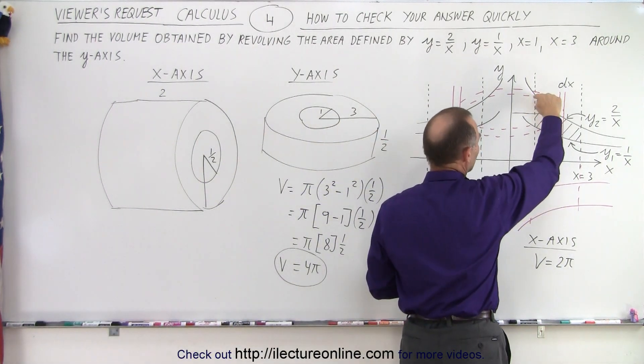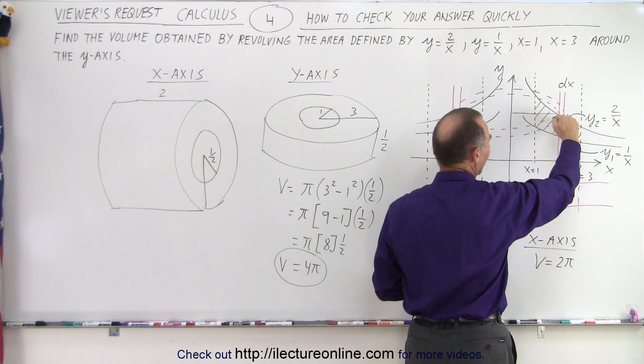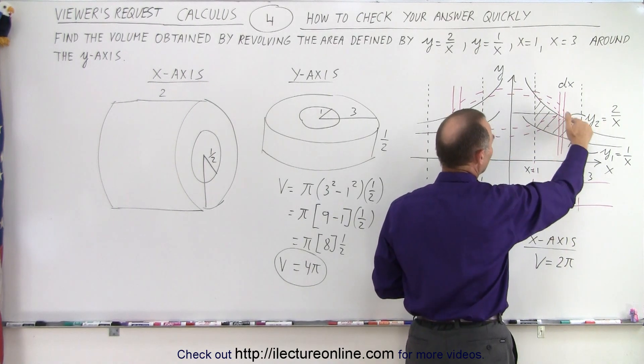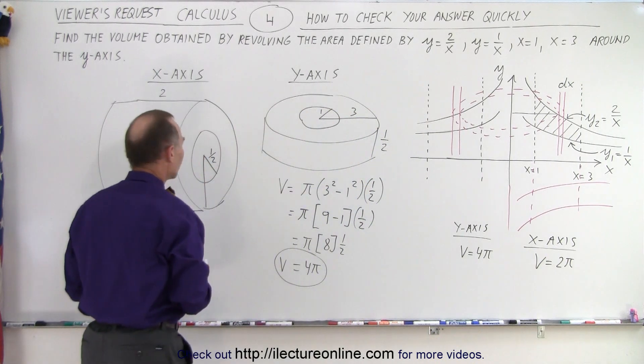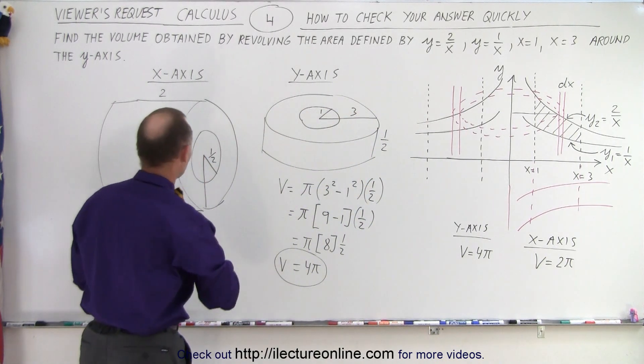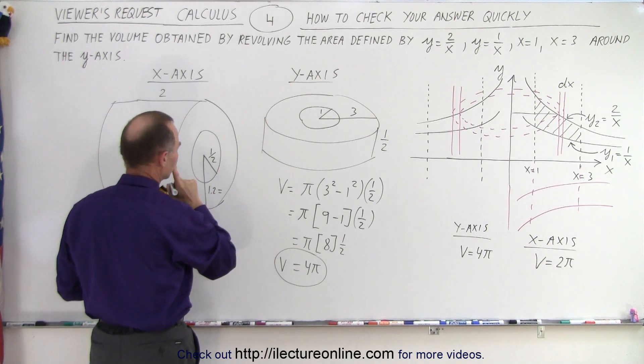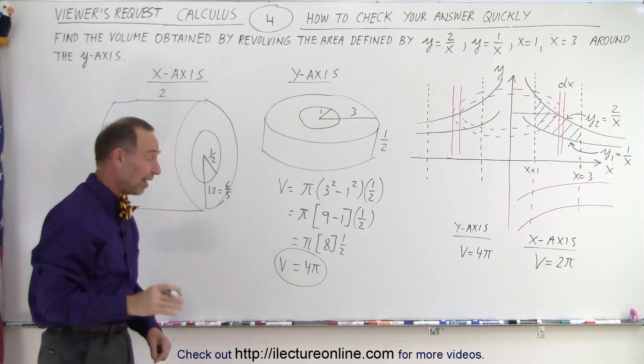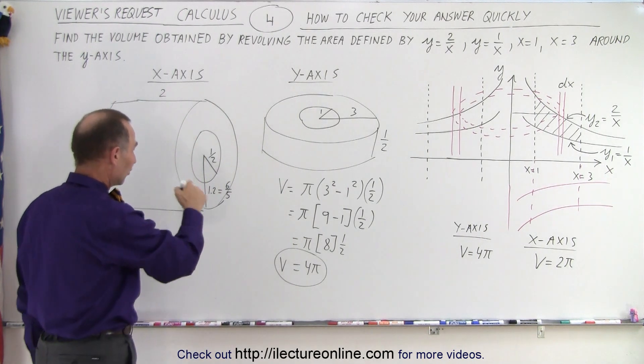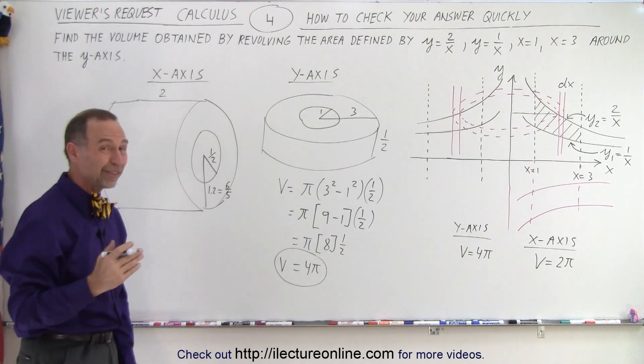What about the outer radius? Well, notice the outer radius would be 2 right there and would be 1 right here. But it would be much closer to 1 for most of the time. So maybe 1.2 or something like that. Let's say 1.2 might be a good way to think about it. So 1.2, which is equal to 6/5, because it's always easier to put it in fraction format. So the inner radius is about 1/2, the outer radius is about 6/5, the length is about 2. What's the volume of that?